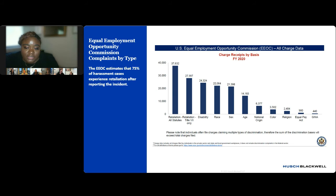Here we have some data from the EEOC reflecting the number of charges filed with the Commission in 2020. As you can see from the chart, the majority of charges filed were retaliation-based. According to the EEOC, about 75% of harassment cases experienced retaliation after they were reported. The following three categories with the most charges filed in 2020 were disability, race, and sex. This information is relevant to DE&I training because the goal of DE&I training is to intervene before problems arise and also to guide employer responses when allegations are reported.